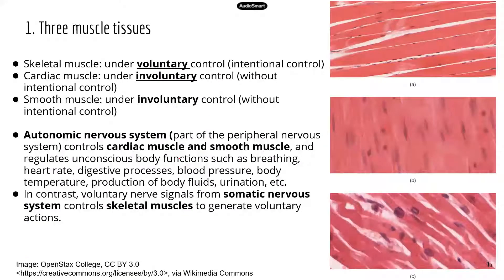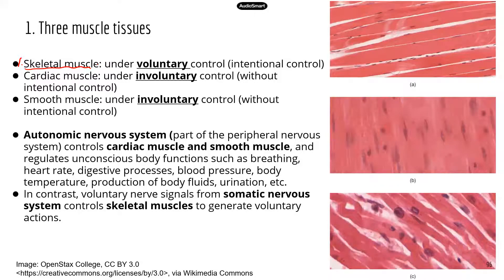There are three types of muscle tissues. The first one is skeletal muscle. The skeletal muscles are attached to bones, and collectively the skeletal muscles and bones work together to generate movement. So for example, you can move your hands, you can move your legs, you can walk, you can run, you can jump. That's all due to the skeletal muscles and bones.